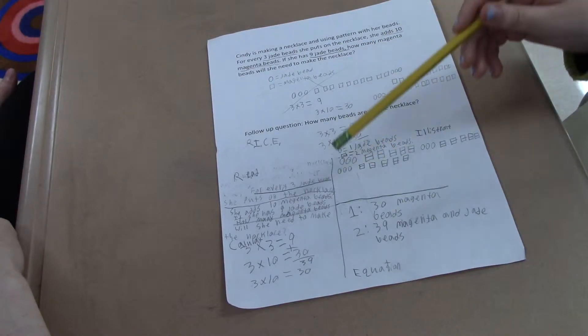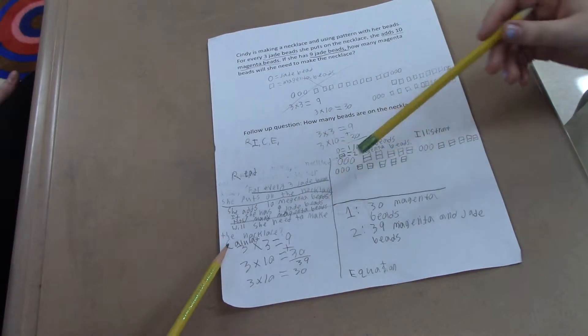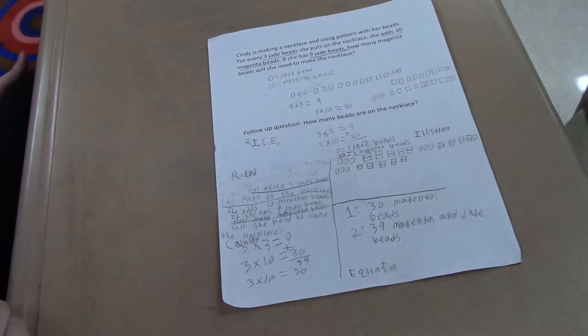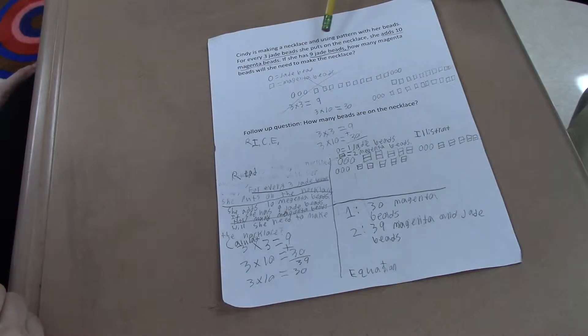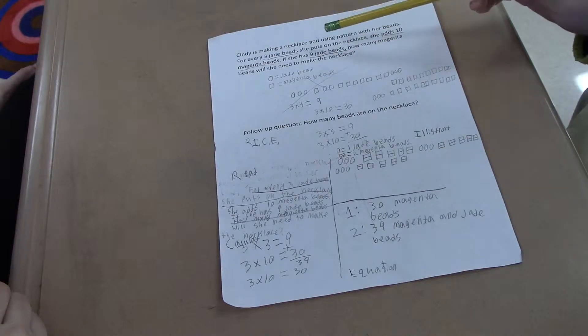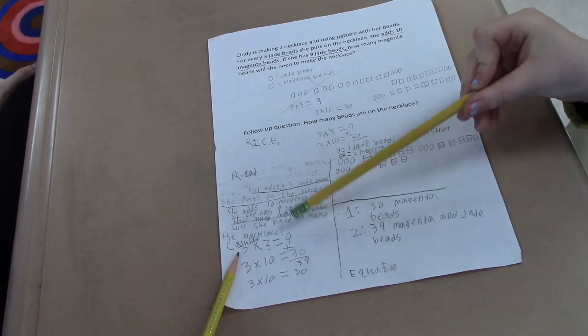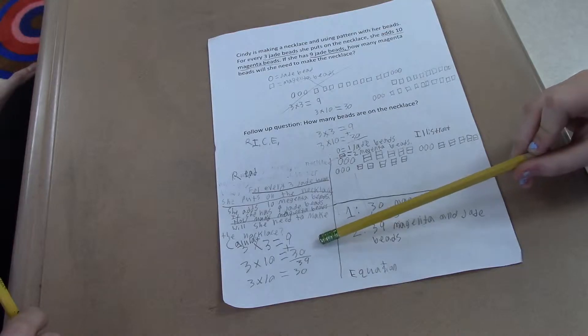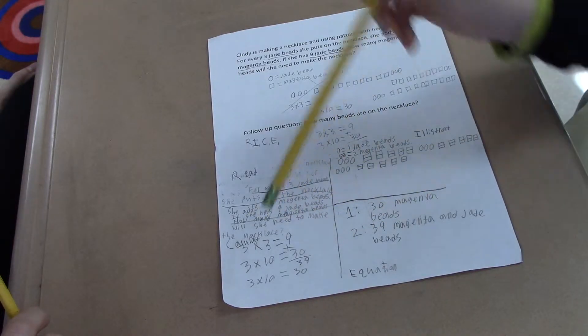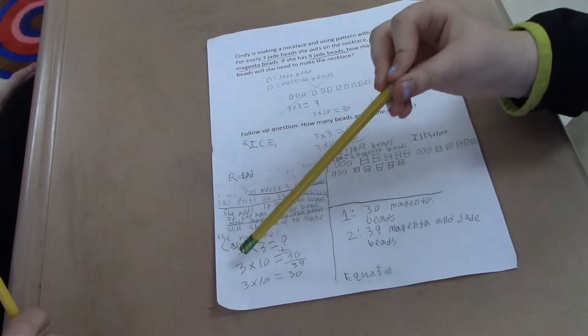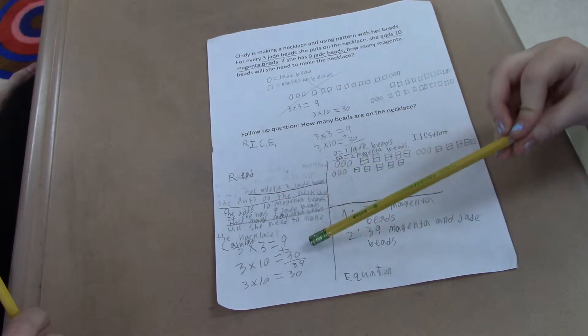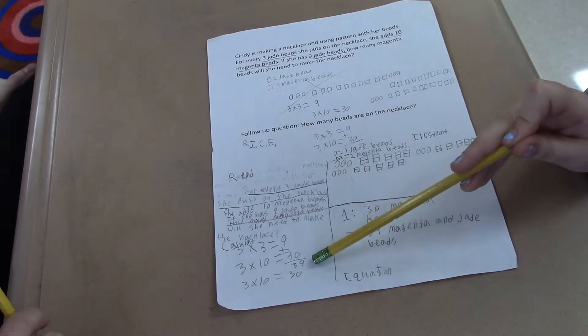And then the C is calculating. It says right here to calculate. Good. Up here it says three jade beads she put on the necklace. And then here it says if she has nine jade beads, how many magenta beads would she need to make? So I knew that three times three was nine. And then three times ten, because I used three here, I would use the three again to multiply it by ten and I got thirty. And then I added that to get thirty-nine.